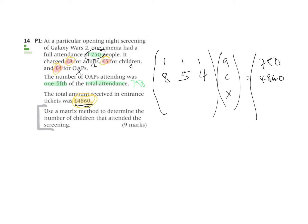And then the last one, I need to come up with a third equation. And the only other piece of information I've not used is this piece here, one-fifth of the total attendance. So here's my OAPs. So five OAPs will be the same as the total attendance. These are zeros.